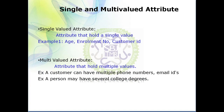The next category is single value attribute versus multi-value attribute. A single value attribute holds only a single value — examples are age of a person, enrollment number, and customer ID. A multi-value attribute holds multiple values. For example, one person may have multiple email IDs, multiple contact numbers, or multiple addresses such as a temporary address and a permanent address.